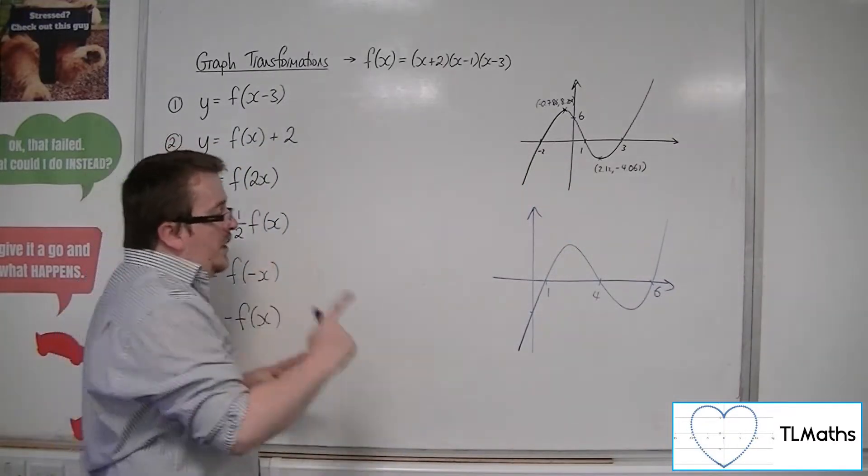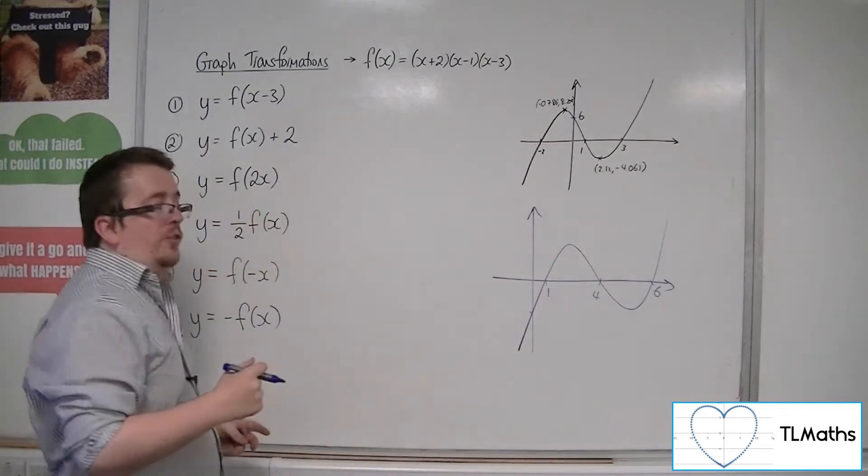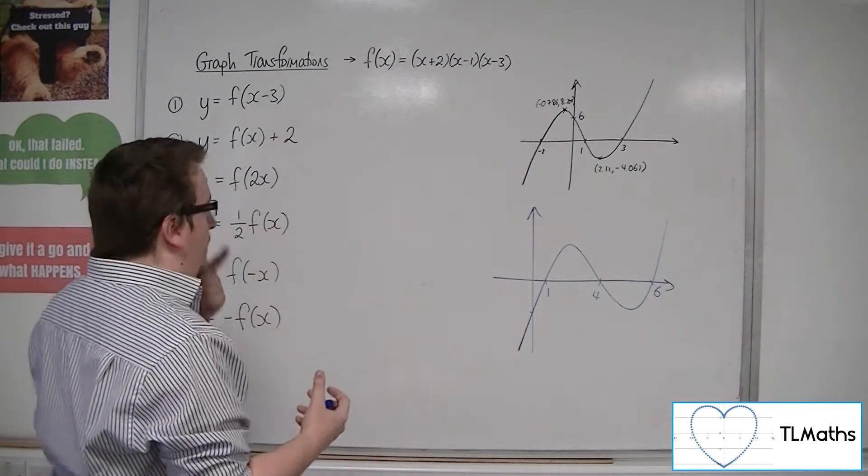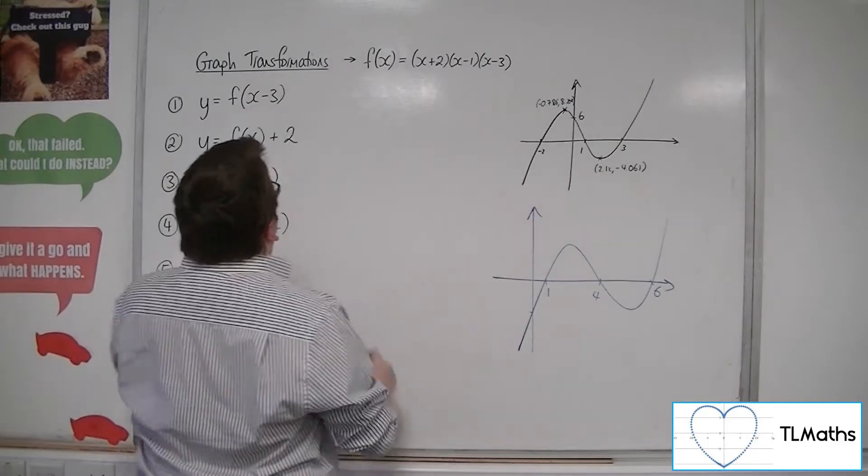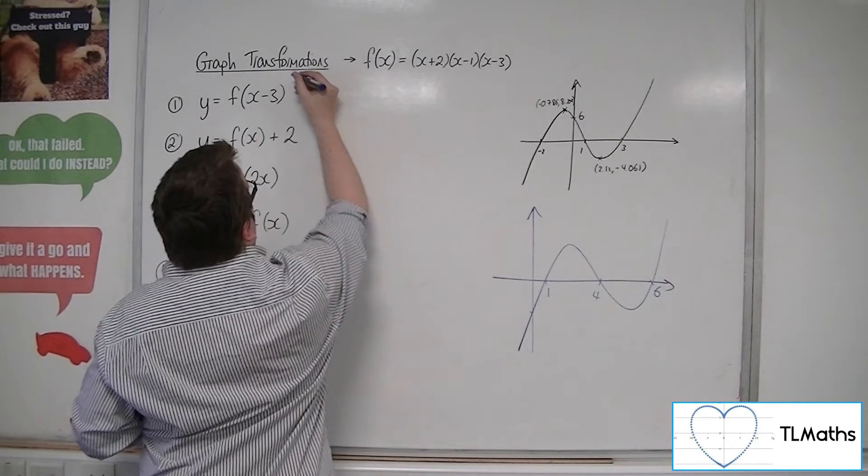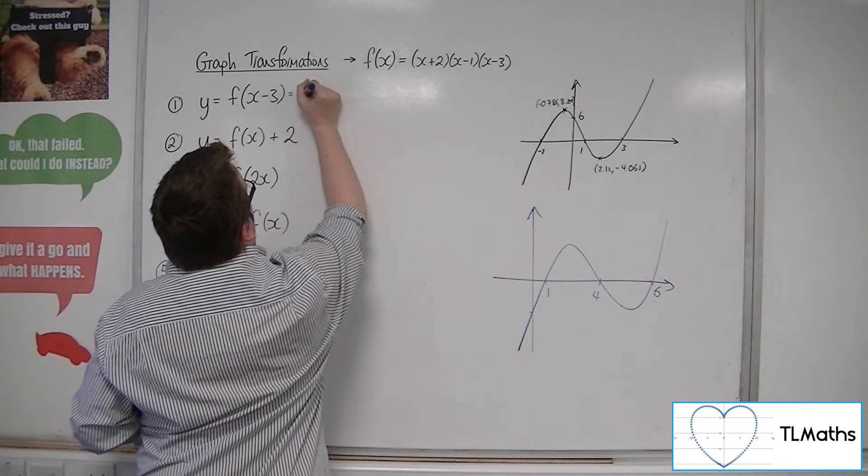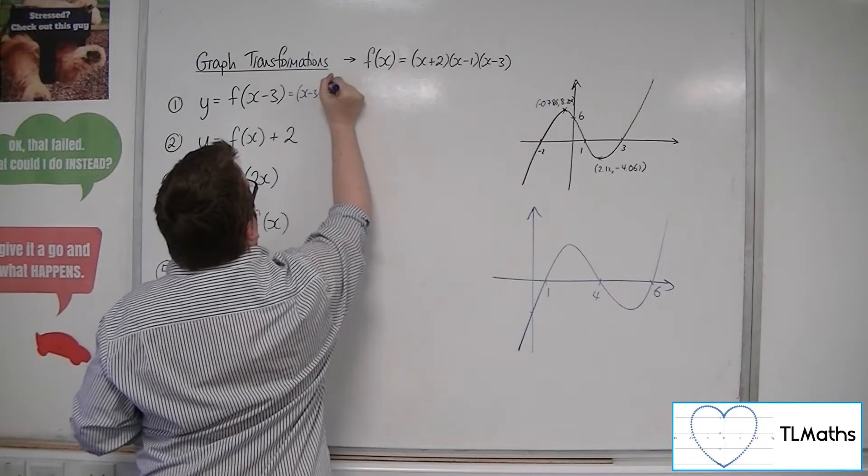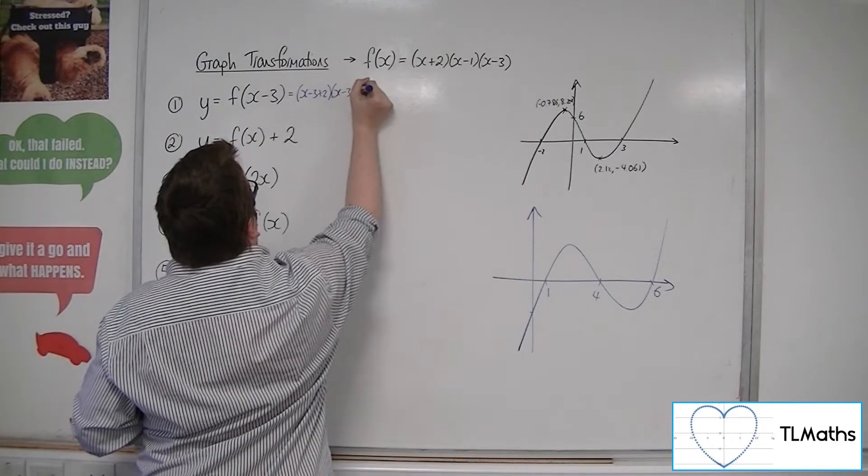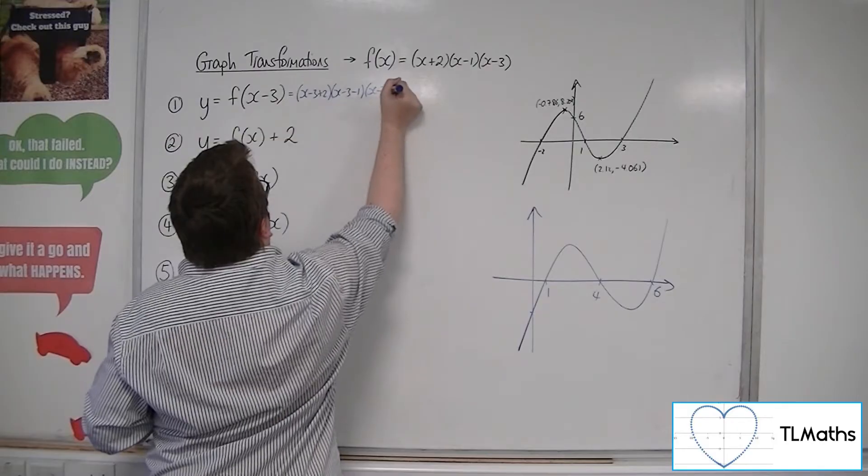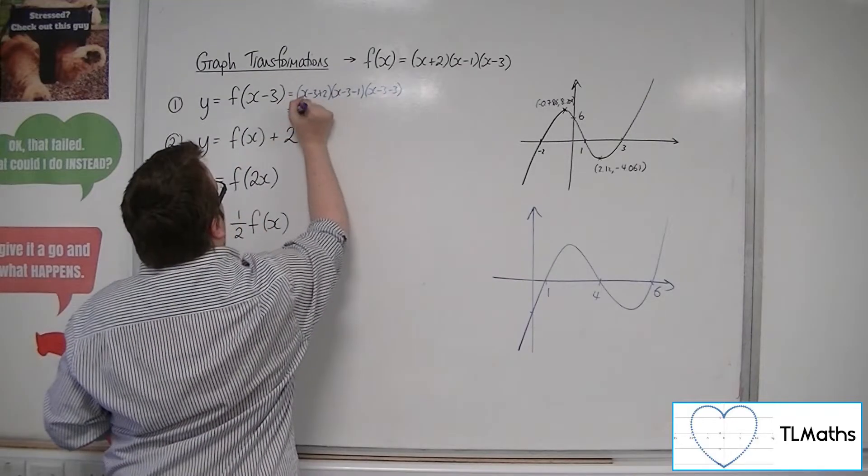I don't know where it's crossing the y-axis, however, but I could work it out by replacing each of the x's with x-3 in the equation. So (x-3+2)(x-3-1)(x-3-3). And if I rewrite that, I'll have (x-1)(x-4)(x-6).